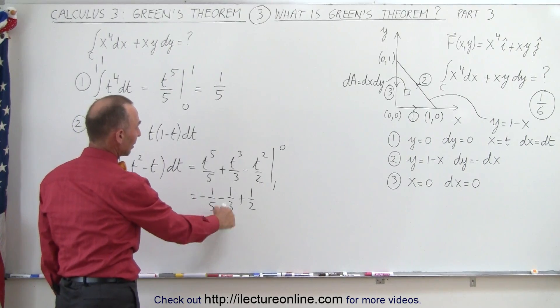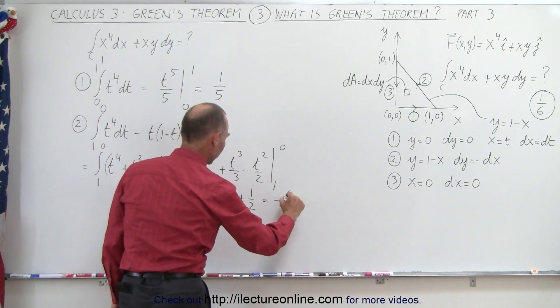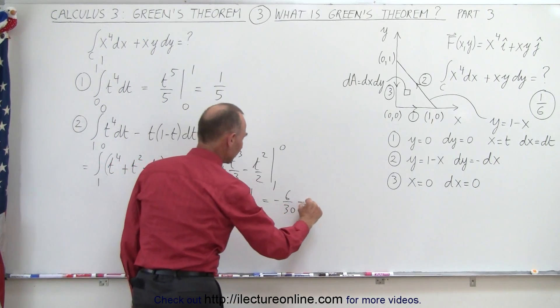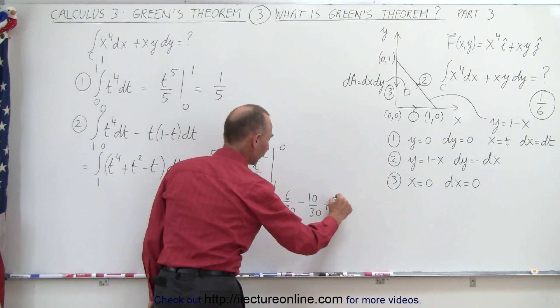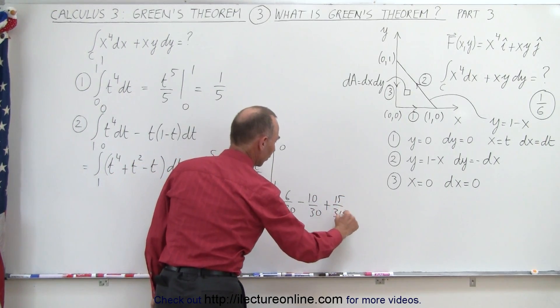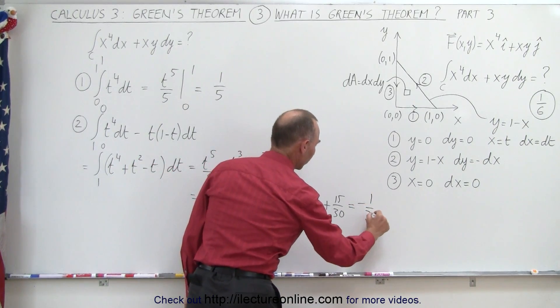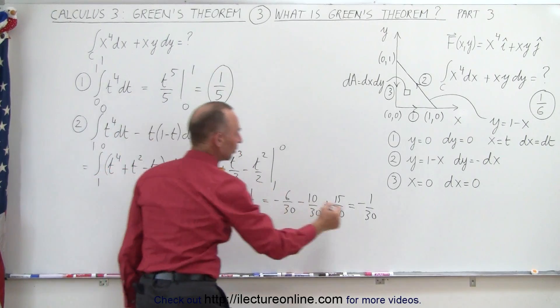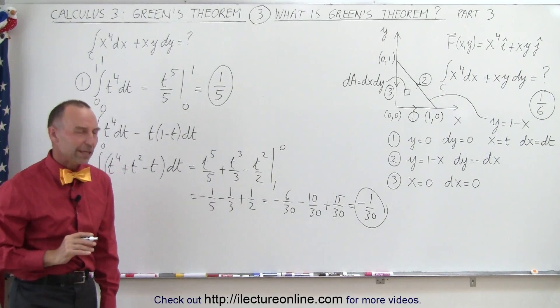The common denominator here, let's see here, that's 15, that would be 30, so this would be equal to minus 6 over 30, and this here would be minus 10 over 30, and plus 15 over 30, and that would be a minus 1 over 30. All right, so we have 1 fifth for the first integral, we have minus 1 30th for the second integral, now let's do the third integral.